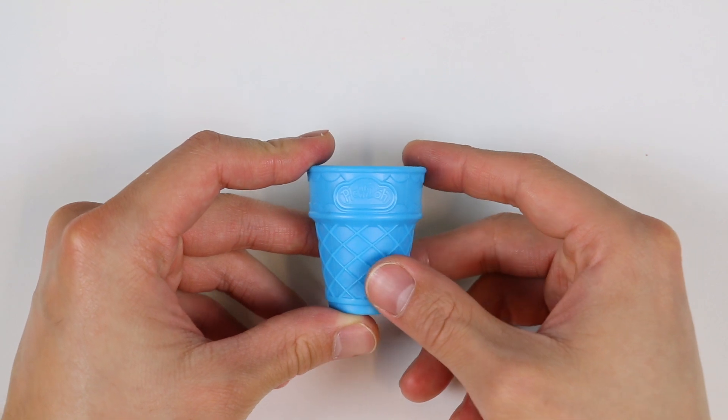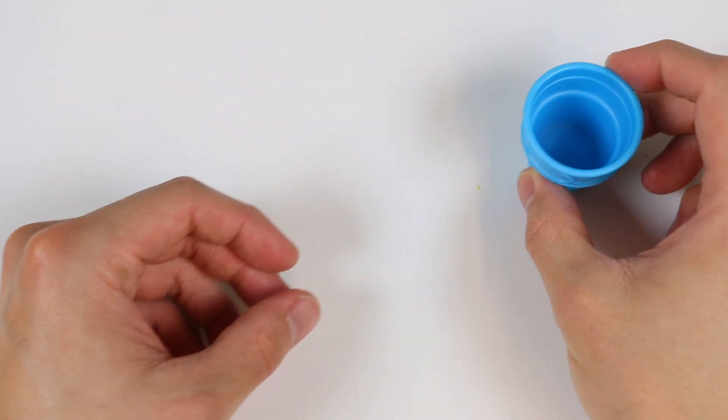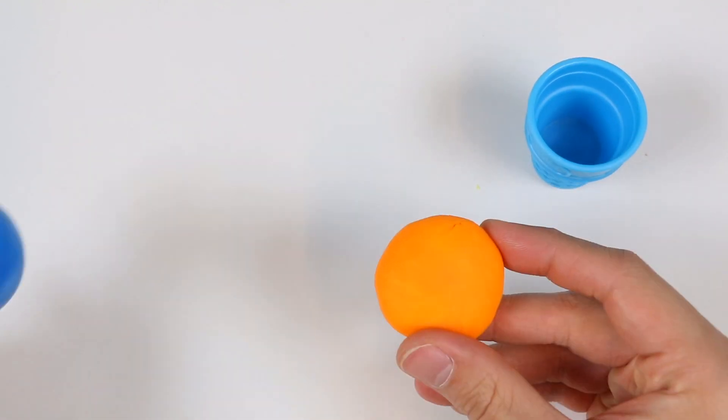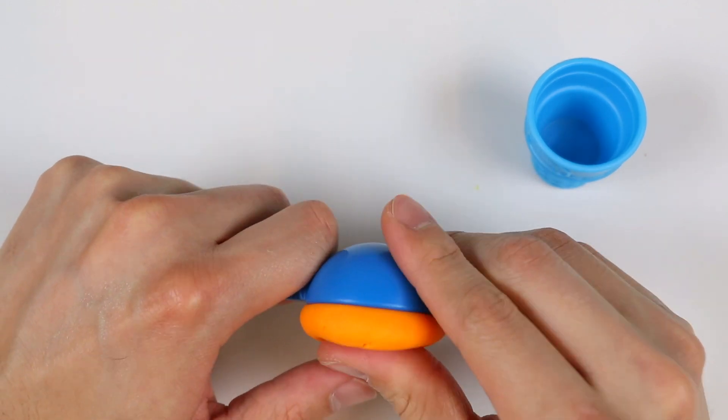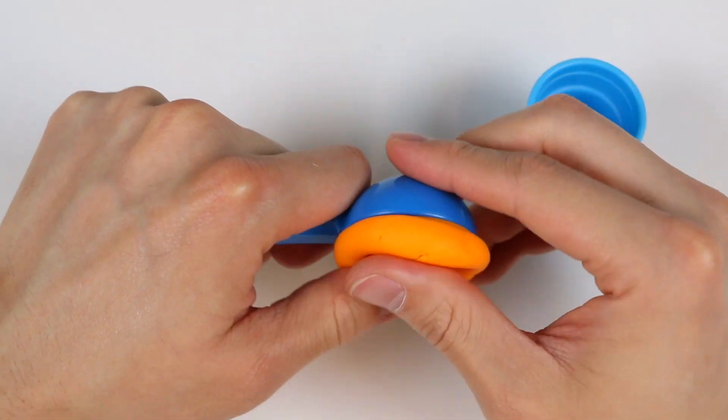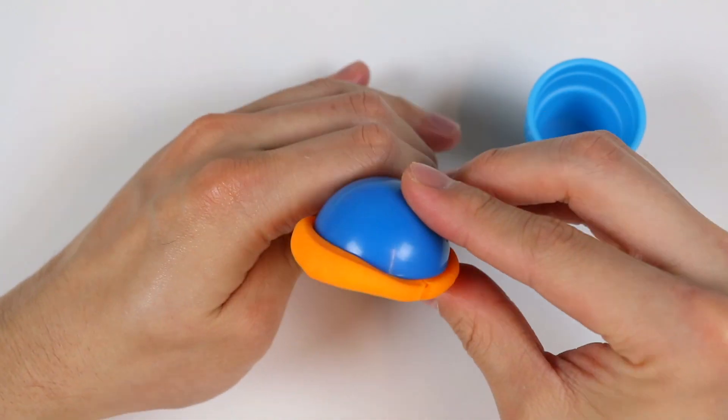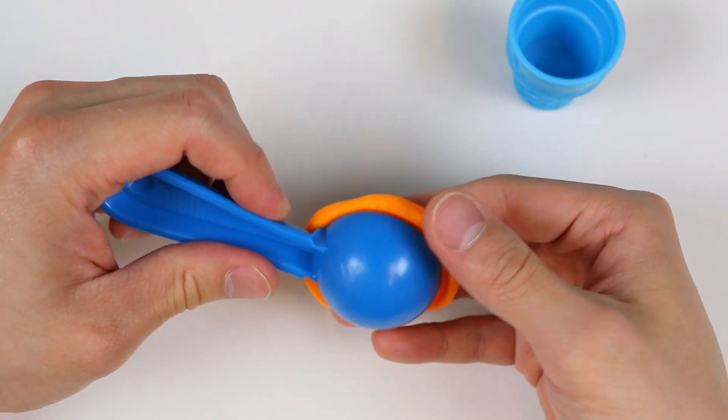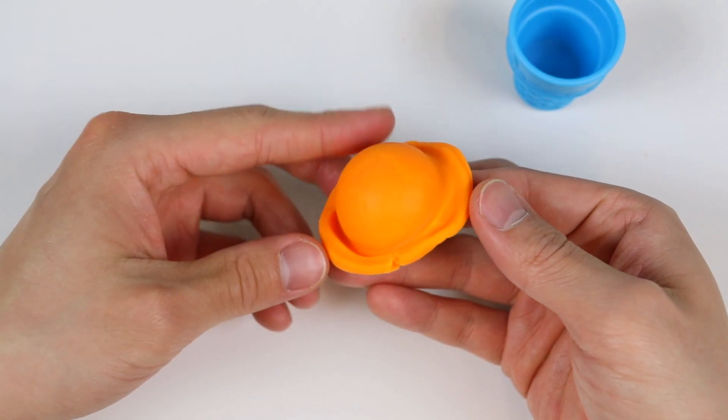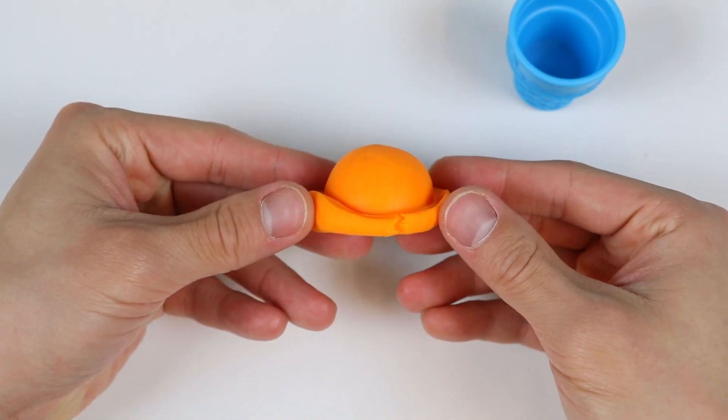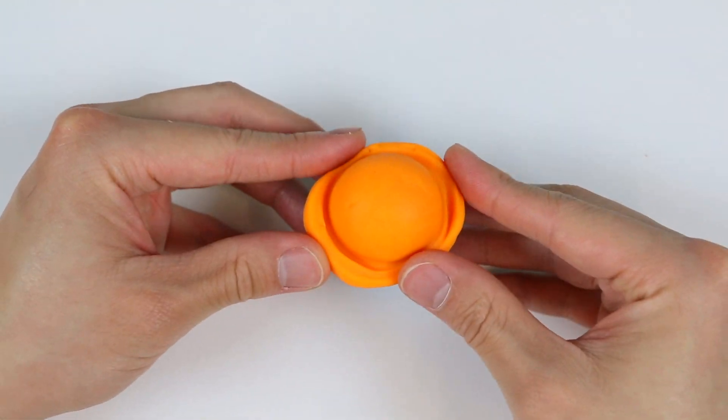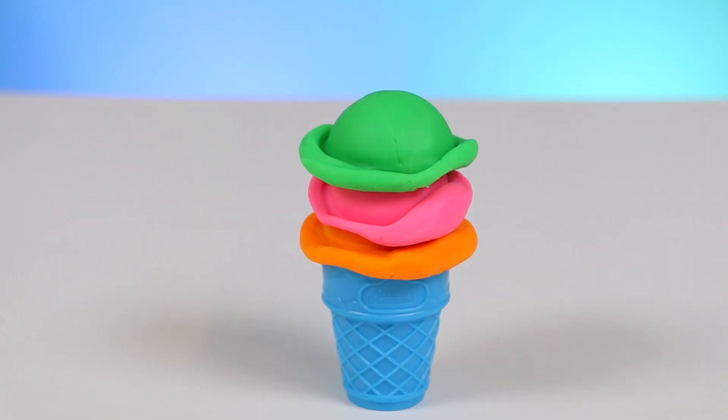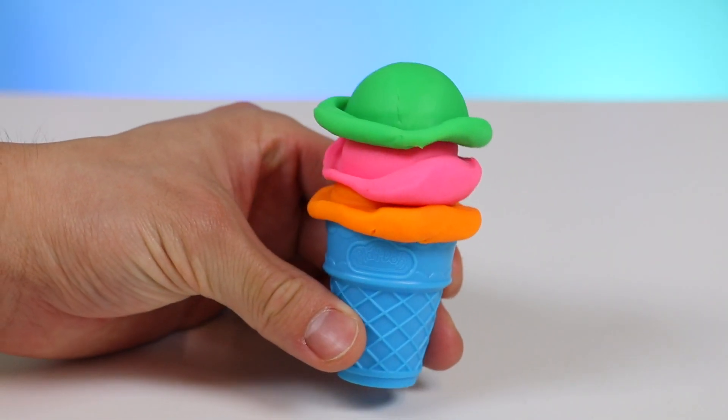Let's make ice cream. Start by making an orange ice cream scoop. Perfect! Let's put this on top of the blue ice cream cone. And let's go for a triple scoop. Now this is what you call dessert.